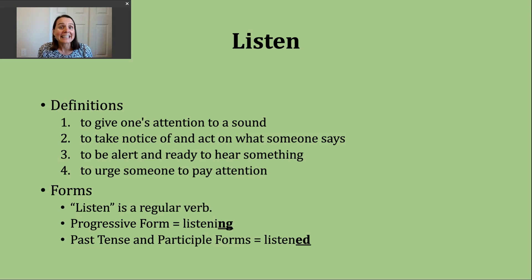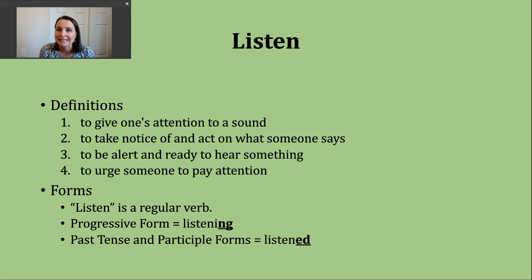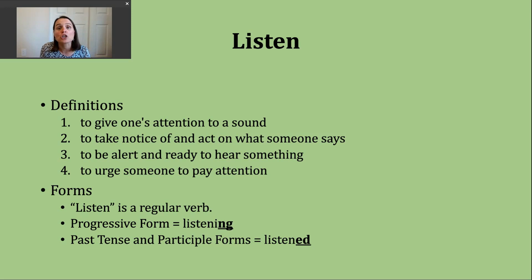You should know that listen is a regular verb. To make the progressive tense, all you need to do is add -ing to form "listening." The past tense and participle forms are made by adding -ed. Our base verb listen ends with a voiced N sound, so our past tense ending just makes a D sound: "listened."